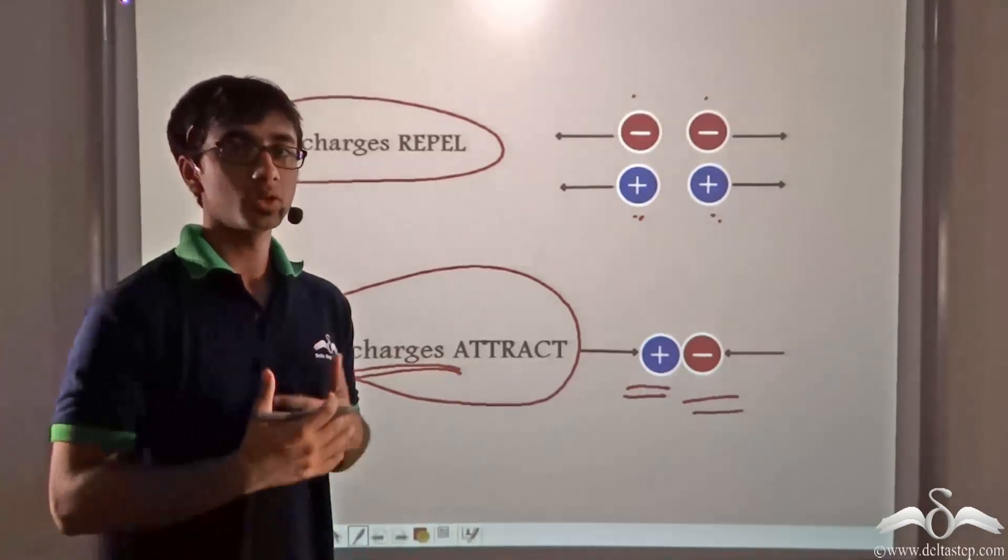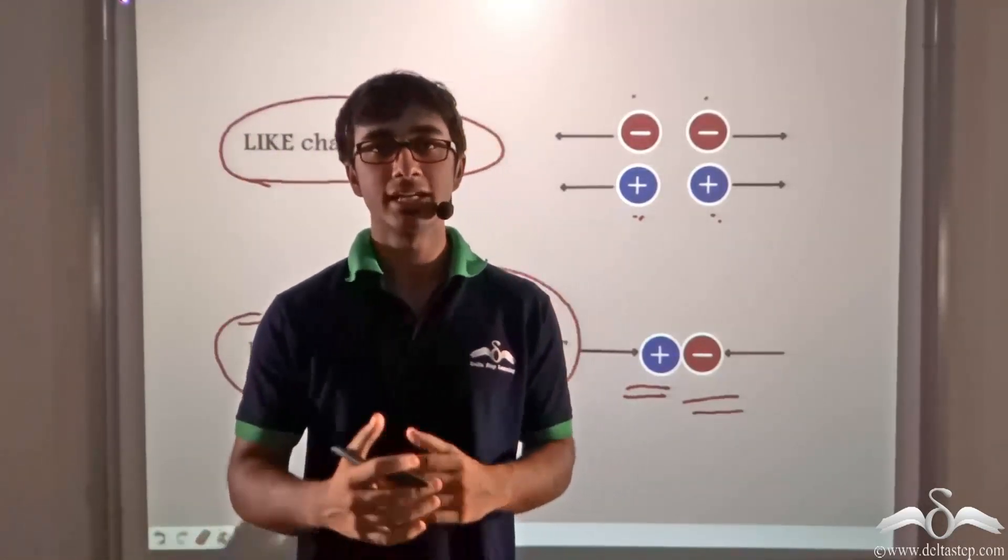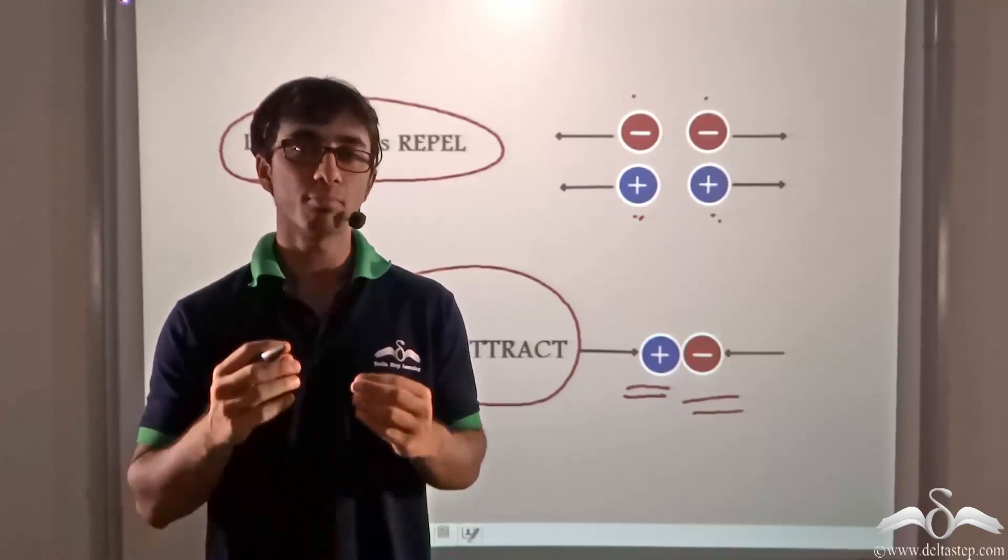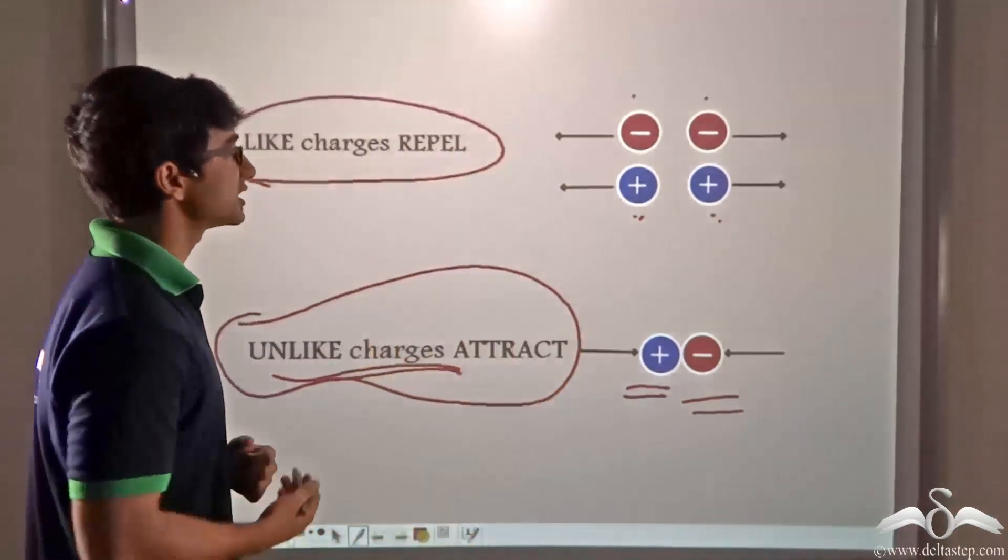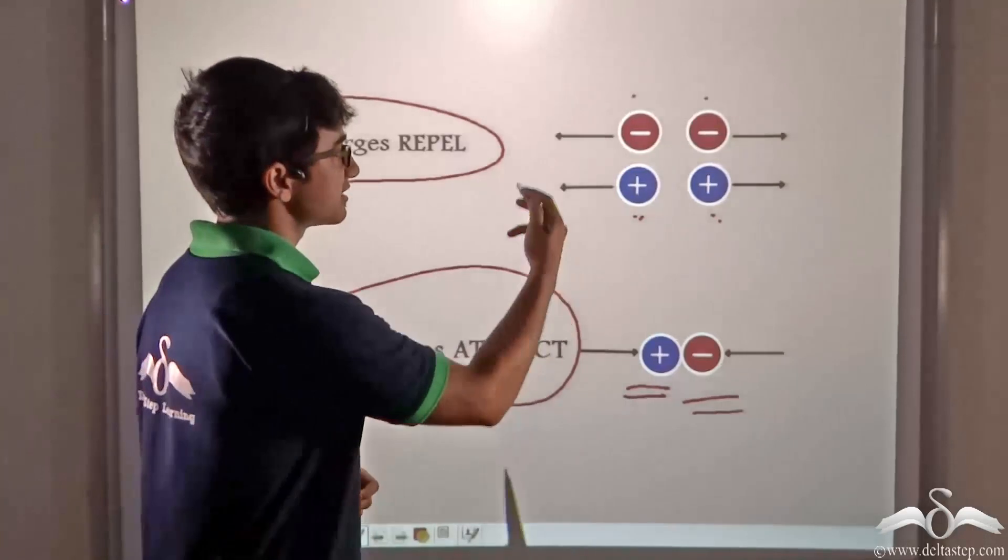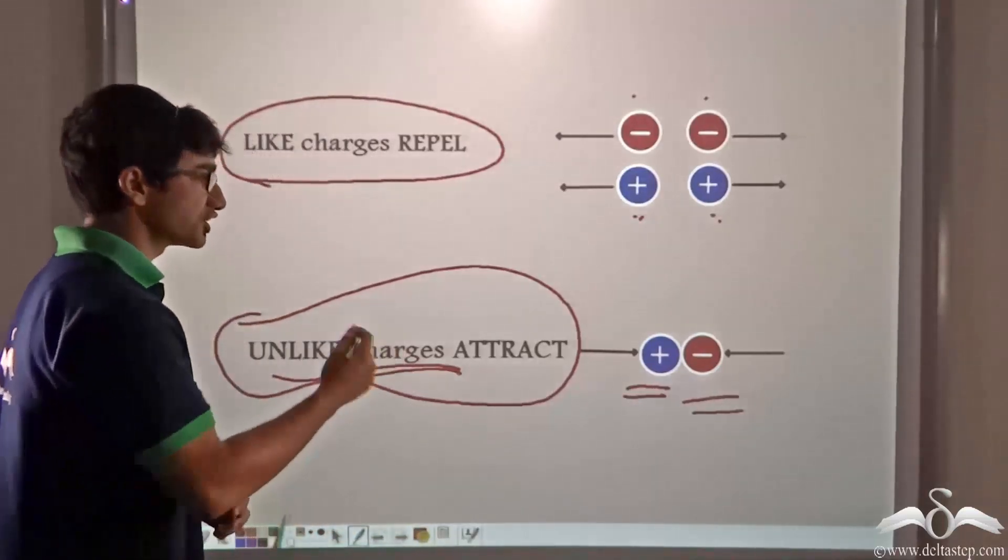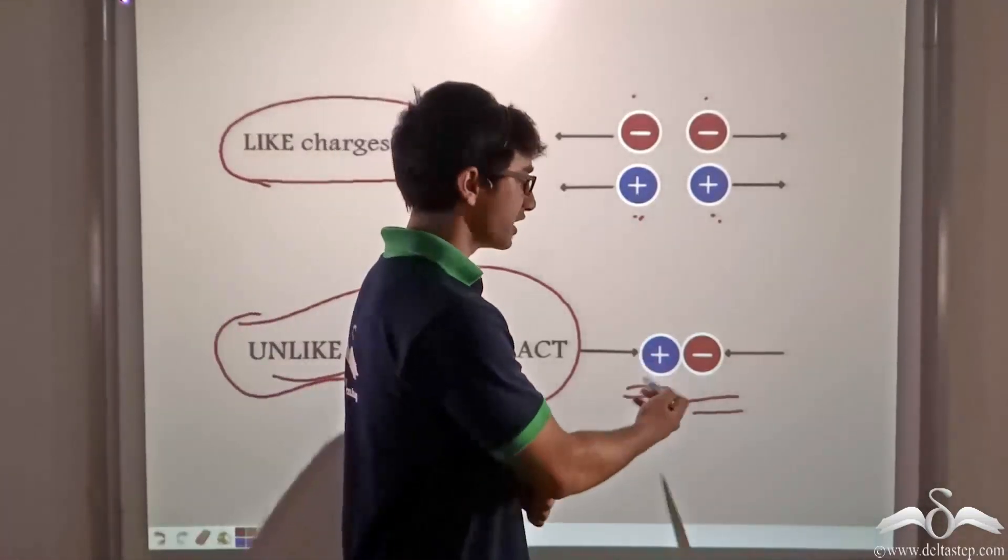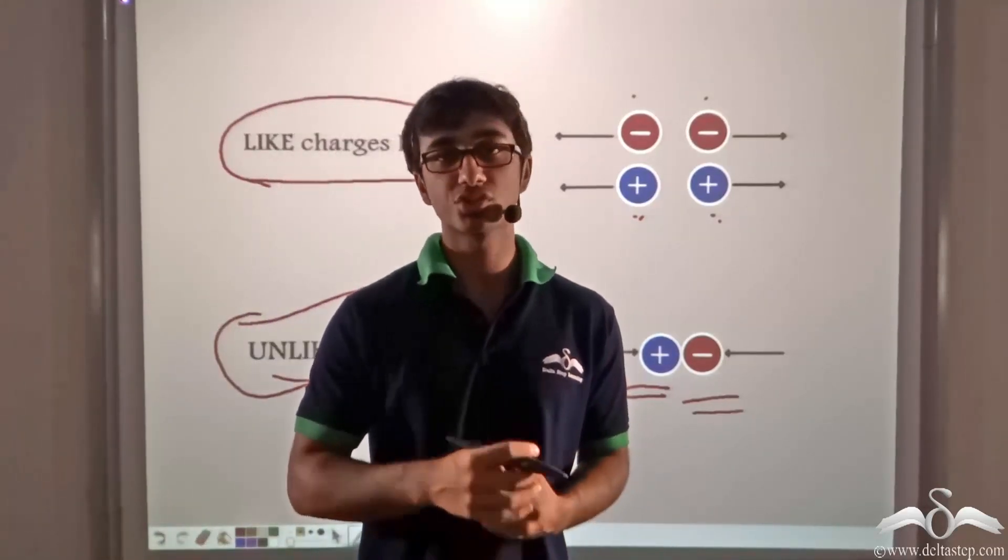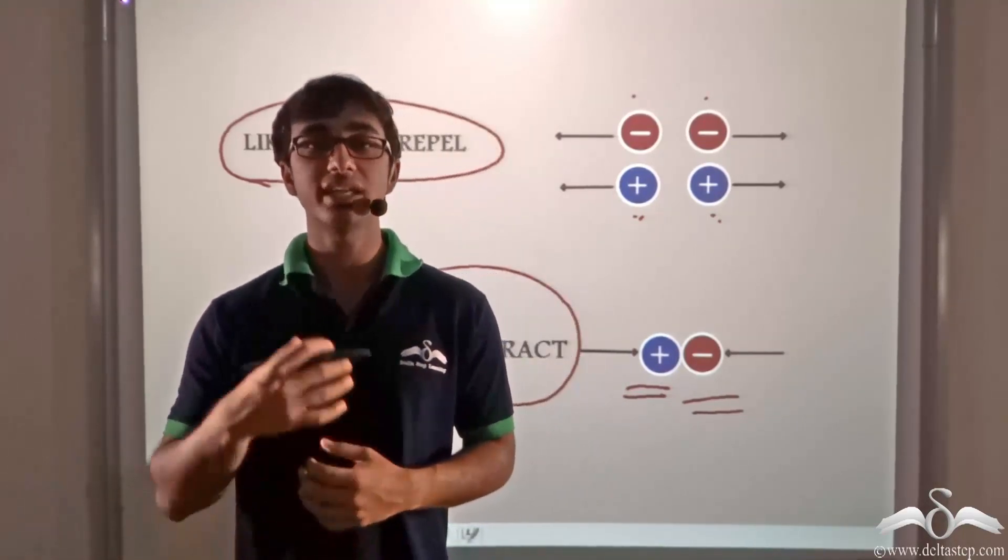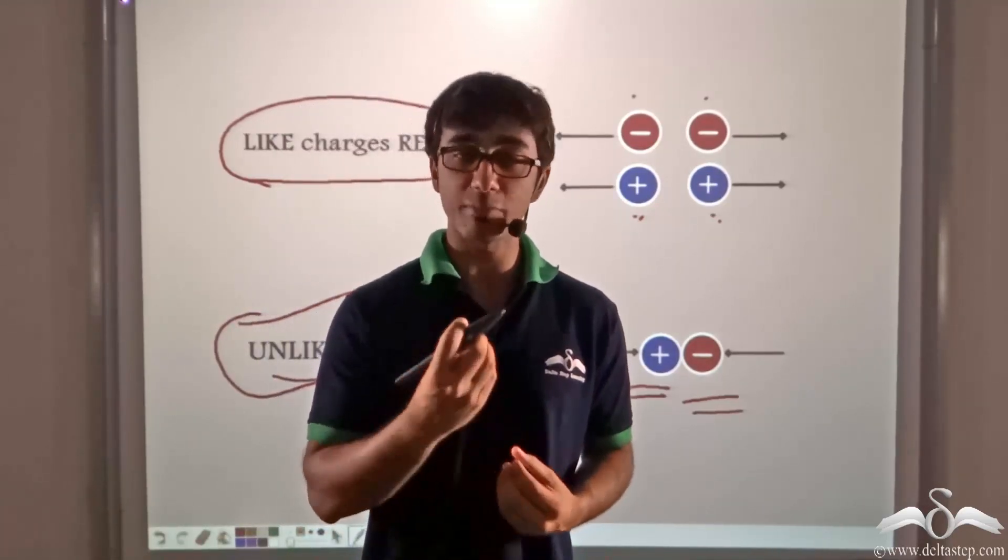So taking a quick recap, we learnt that there are two kinds of charges. Positive charges and negative charges. Now these charges are conventionally taken as positive for a glass rod and negative for an ebonite rod. We also found that like charges repel one another. That is, negative repels negative and positive repels positive. And we also saw that unlike charges attract one another. In other words, negative attracts positive. Much like we saw in the case of the animations where the glass rod being brought close to the glass rod or the ebonite rod being close to the ebonite rod after rubbing, repelled one another. But when the glass rod was brought close to the ebonite rod, they attracted one another.